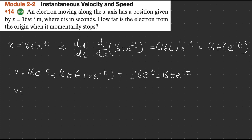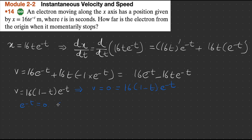We can write this equation as v = 16(1 - t)·e^(-t). Since the problem states the electron will momentarily stop, velocity equals zero. Setting v = 0: 0 = 16(1 - t)·e^(-t). We have two terms; either e^(-t) = 0 or 16(1 - t) = 0. From the second equation, 16t = 16, so t = 1 second.